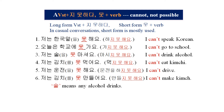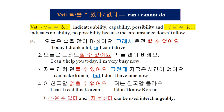6. 저는 김치를 못 만들어요. — I can't make kimchi. Note: 술 means any alcohol drinks. Now, let's practice 을 수 있다 and 을 수 없다.